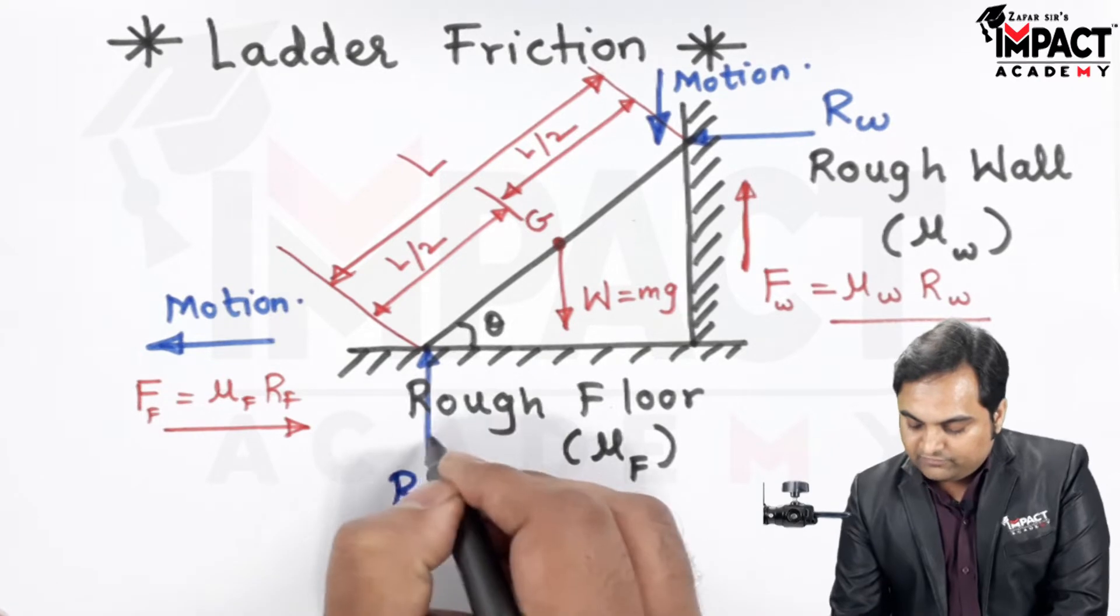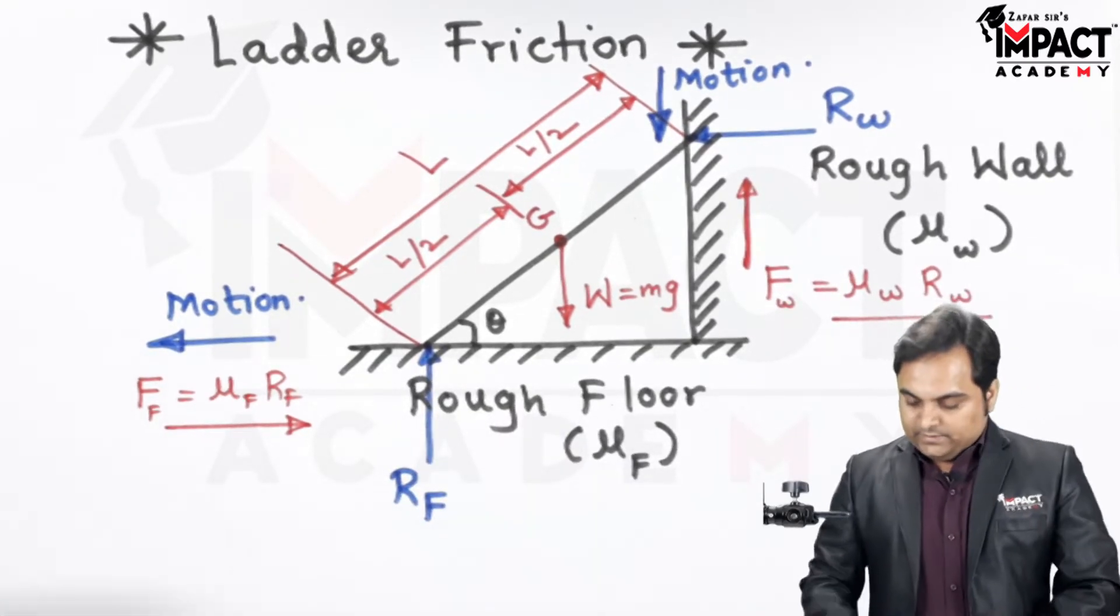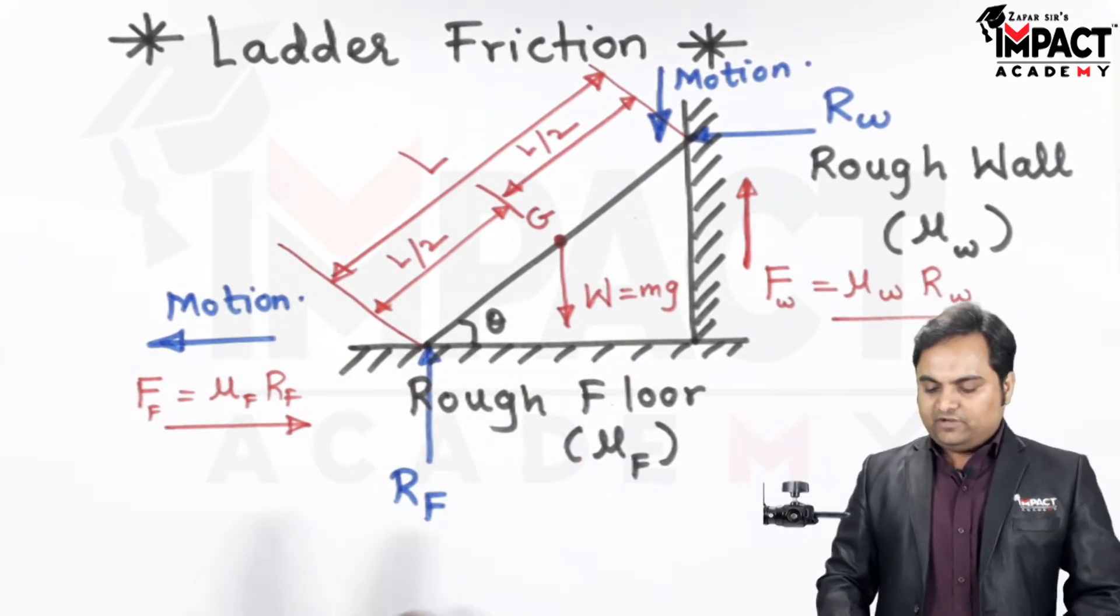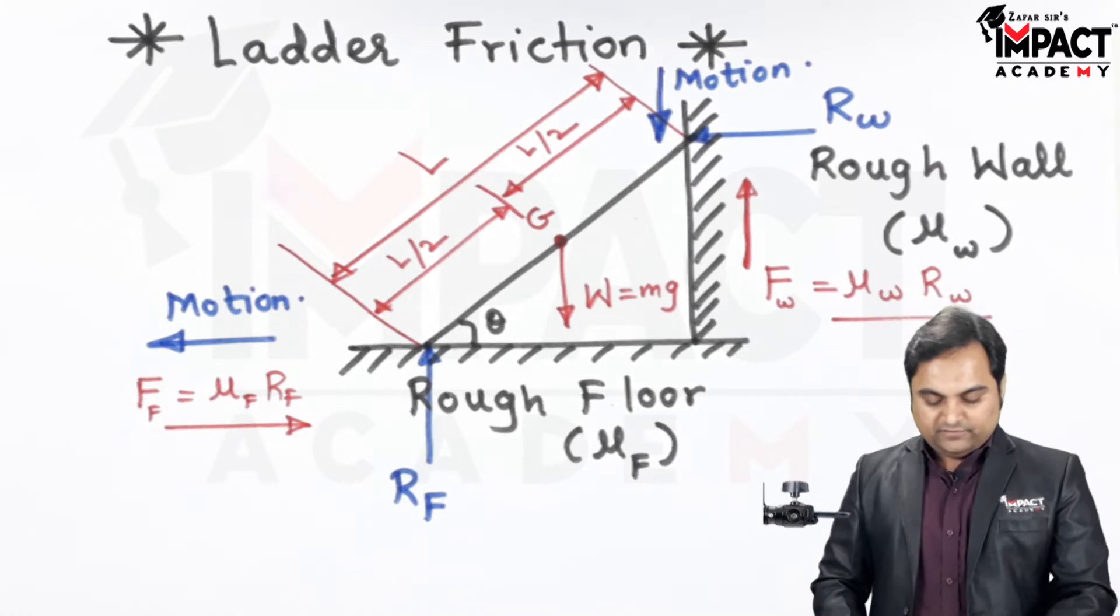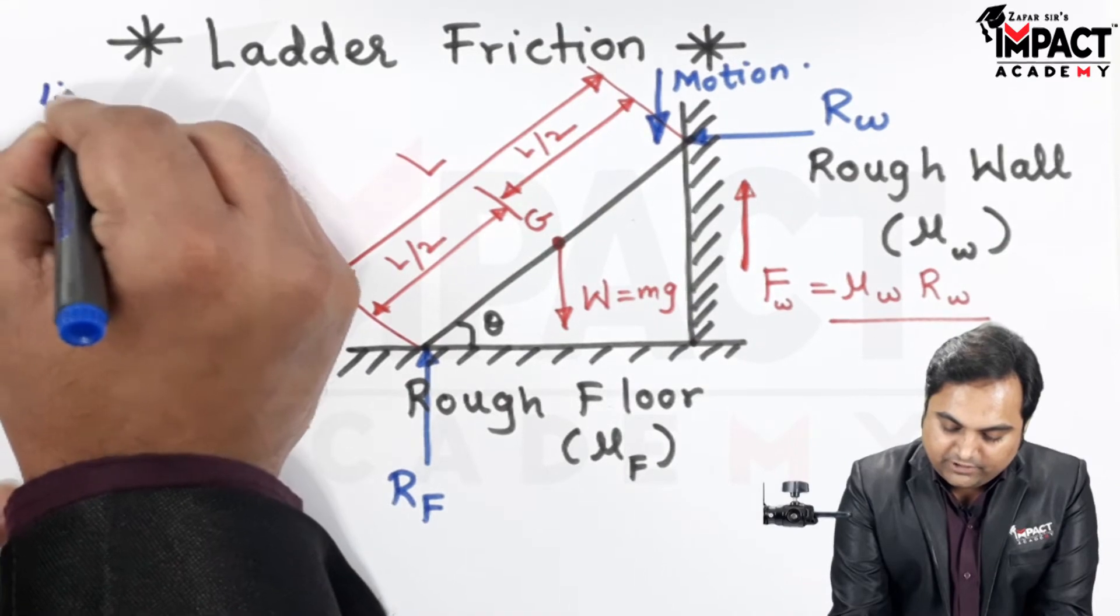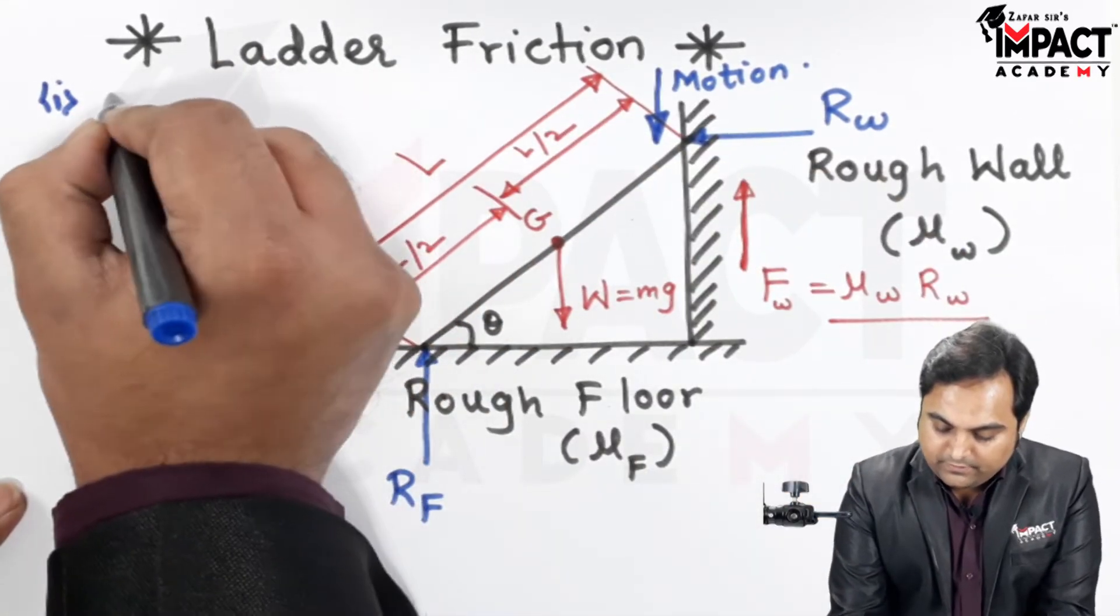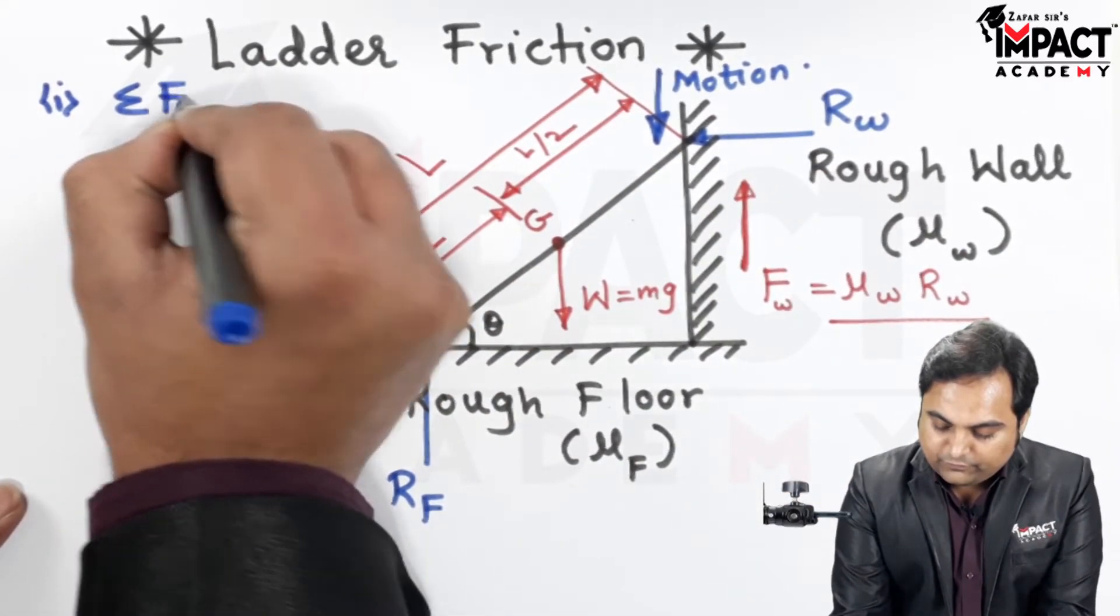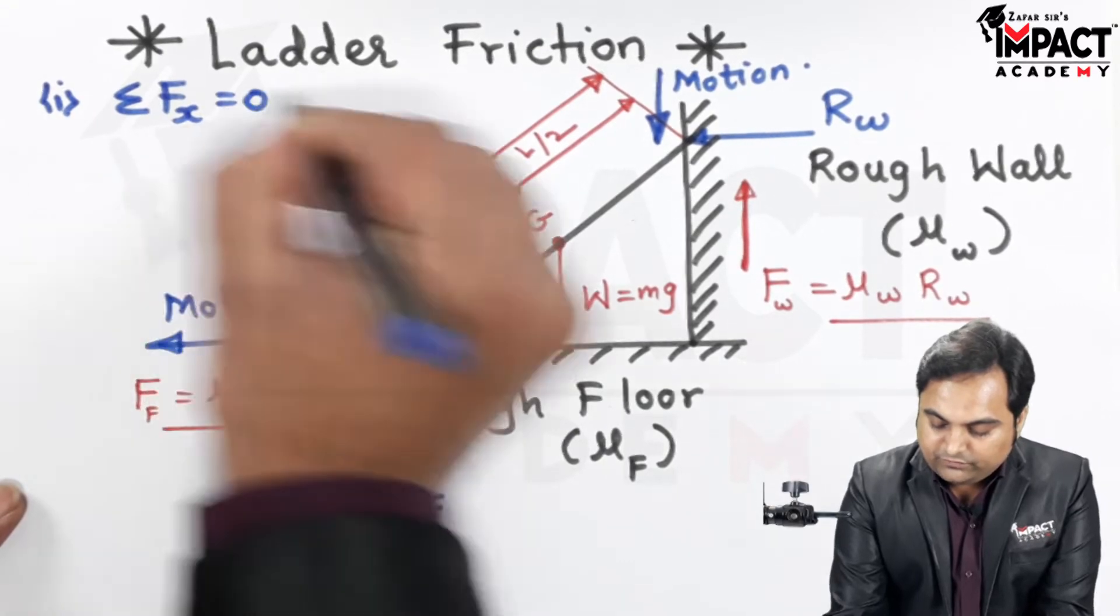Then once we have completed this, we can solve the problems related to ladder friction by using the three conditions of equilibrium. And those are summation of all horizontal forces equal to zero, considering the rightward forces as plus and leftward as minus or negative.